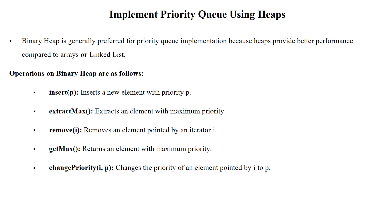Implement the priority queue by using the heap data structure. Here we are going to use the heap with two properties: the structure property, which should satisfy the binary tree structure property, and the heap property, where the parent and child node should be compared after inserting a node. Binary heap is generally preferred for priority queue implementation because it provides better performance compared to arrays and linked lists, which take order of N when searching, deleting, or inserting a node.